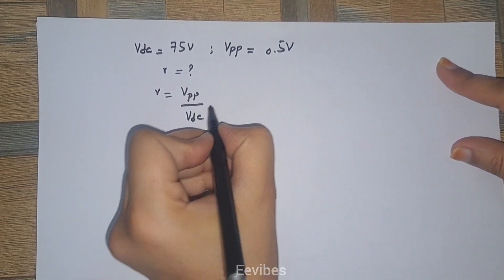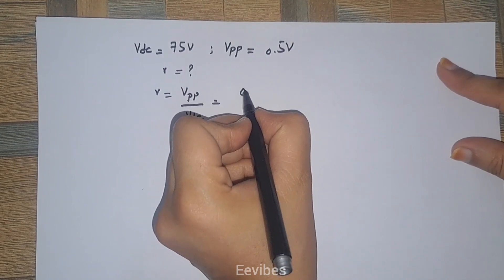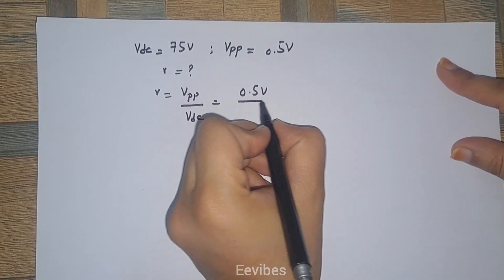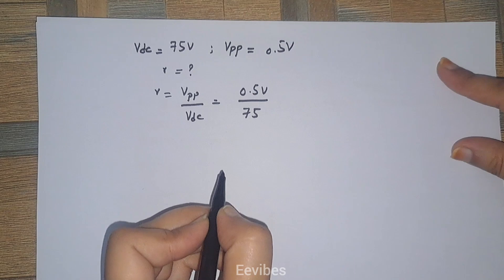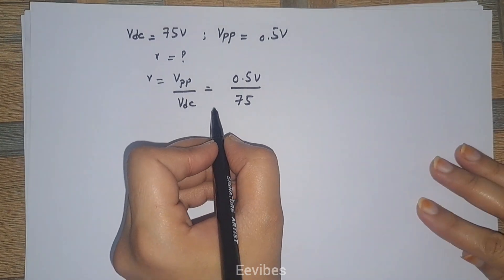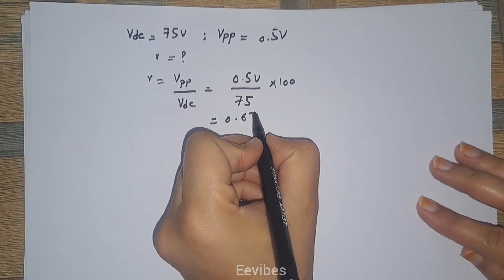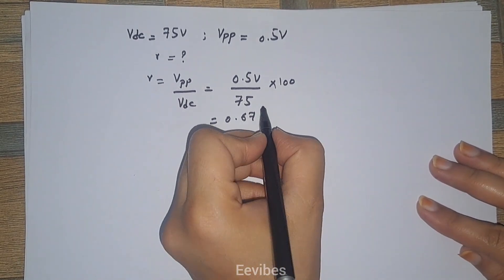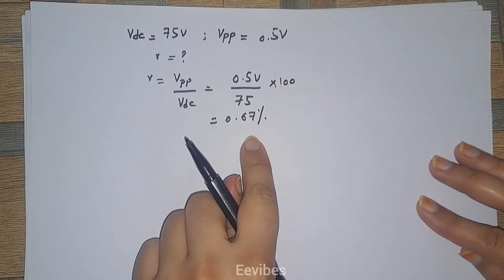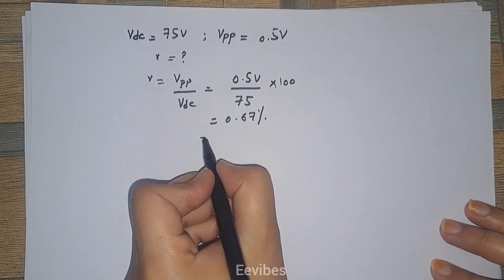Substitute the given voltage values and when you multiply by 100, you get the ripple factor equal to 0.67%, represented in percentage form.